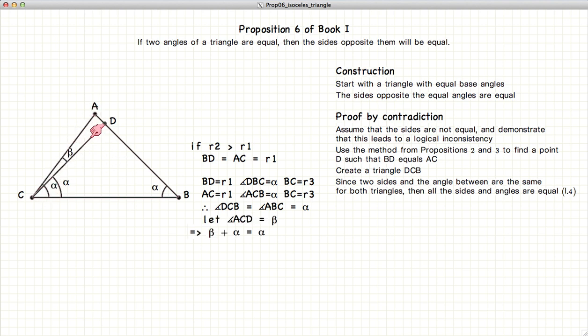We also have another angle alpha plus an angle ACD. So if we label the angle ACD, we're left with this angle alpha is equal to beta plus alpha. So we have beta plus alpha equals alpha.